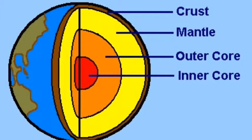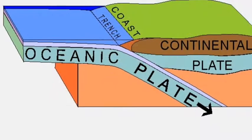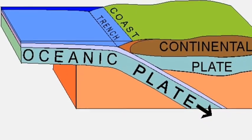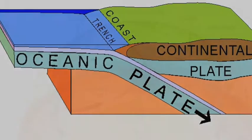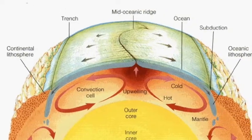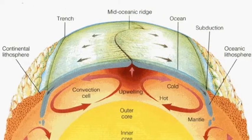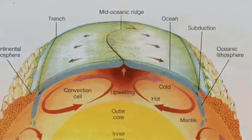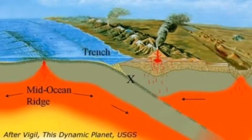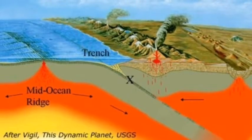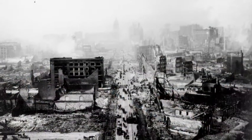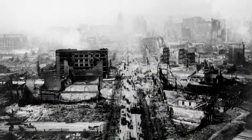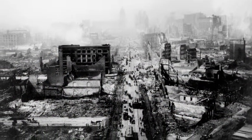Students will then learn about the different layers of the Earth's structure. They will learn about different types of plate boundaries, plate movements, and landforms and processes that result from these movements — for example, mountain building, deep ocean trenches, ridges, and volcanoes. Students will evaluate how these processes affect the lives of humans.